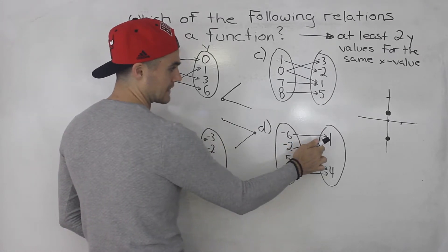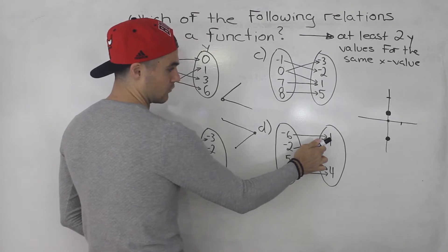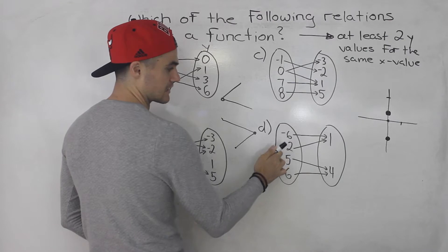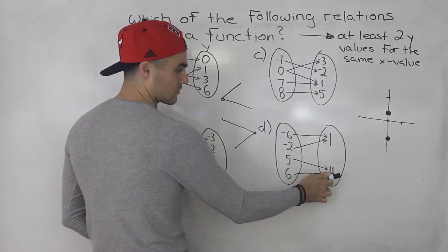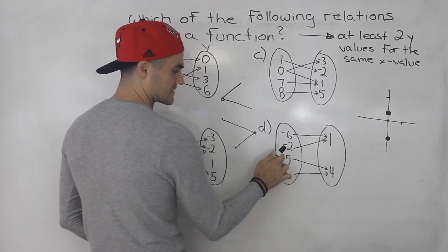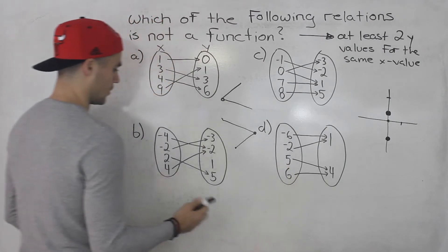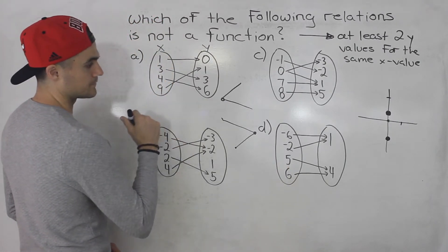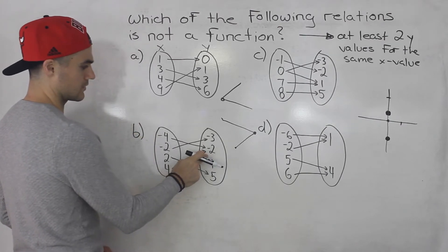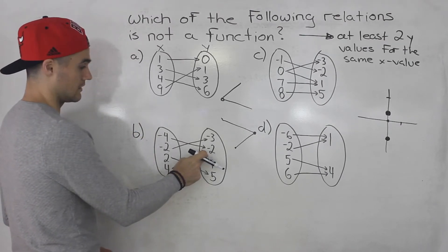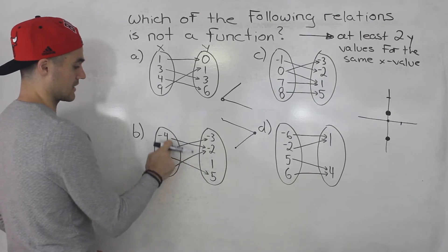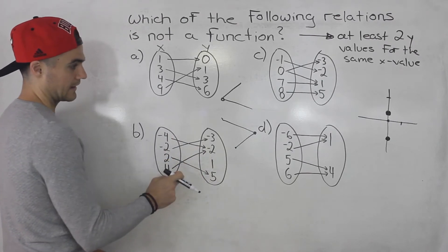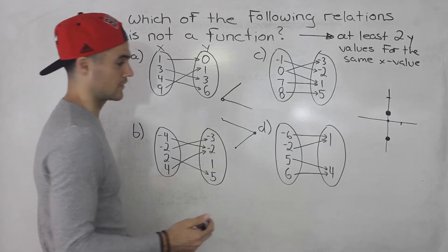For example, for this single y value of one there are two x values: negative six and negative two. Same thing here — this y value of four has x values of five and six. And over here, notice this negative two y value has two x values: negative four and positive four. That can happen in a function.